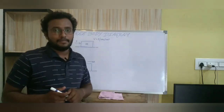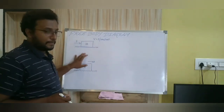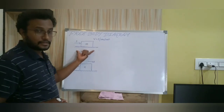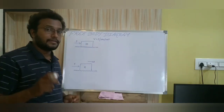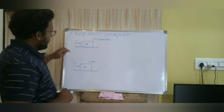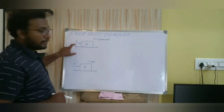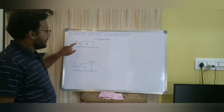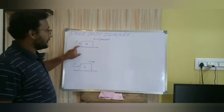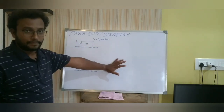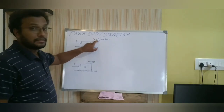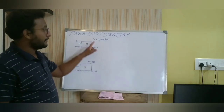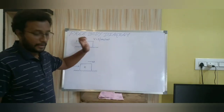Let me go with an example. Here we have a block of mass M which is placed on a rough surface. A rough surface will provide friction force, and this is acted upon by an external force F. Even under this external force, assume that the object is not moving. That means its velocity is zero or constant.